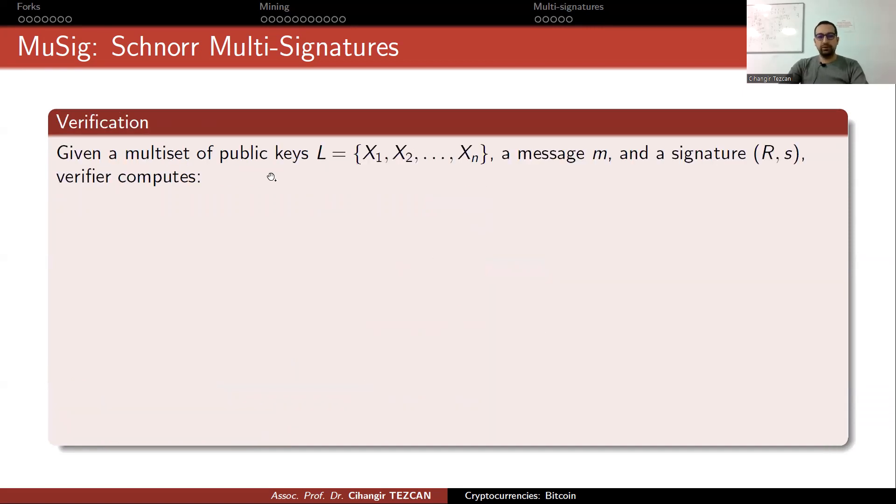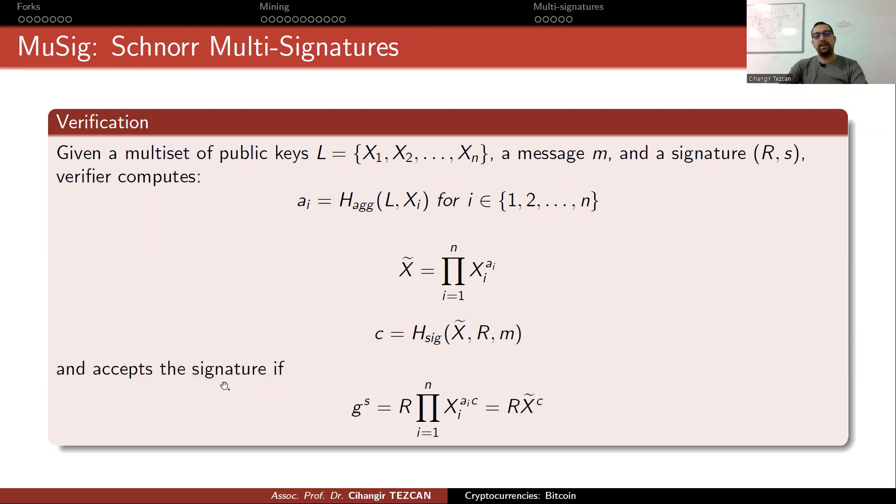Verification is similar. You have multiple public keys here. M is the message. M people are signing. So, you obtain the signature R and S. Now, you have to need to verify it. You, again, calculate the aggregation like this. You calculate this as the signers did. You multiply all of the X_i's and obtain X tilde. You also calculate H_sig. So, you calculate the hash of these values, obtain c. And accept the signature if multiplication of all of these values end up with G to the S.